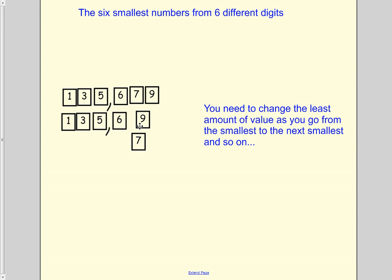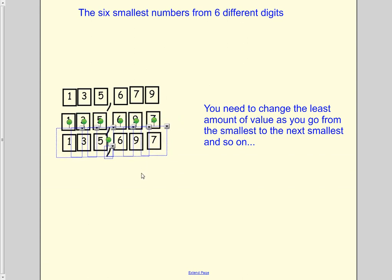So how do I do that? I rearrange my ones and tens places. There's my second smallest number, 135,697.